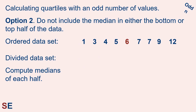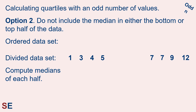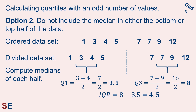For Option 2, we do not include the median in either the bottom or top half. We divide the ordered data set into two halves but do not include the 6 in either half. The bottom half is 1, 3, 4, and 5. We compute the median: 3 plus 4 divided by 2, 7 divided by 2 is 3.5. In the top half we have 7, 7, 9, and 12. Q3 is 7 plus 9 is 16, divided by 2 is 8. The IQR is 8 minus 3.5, which gives us 4.5.